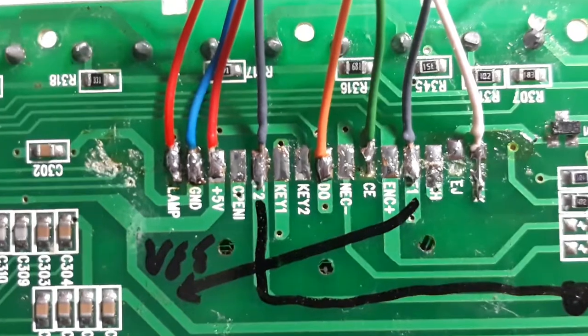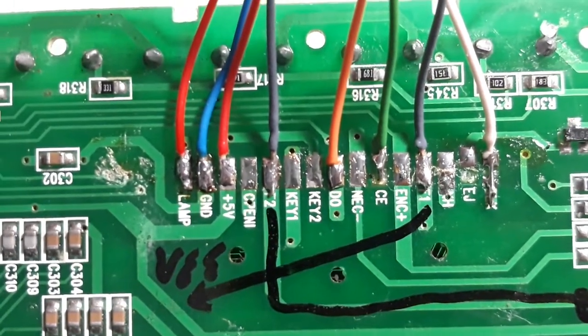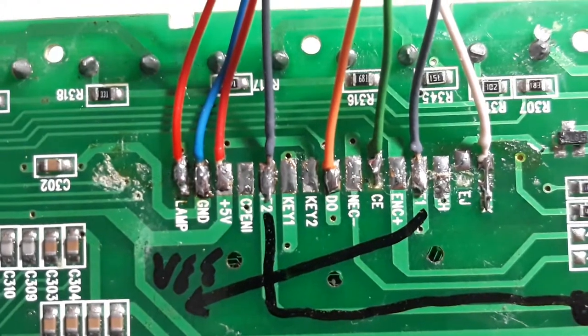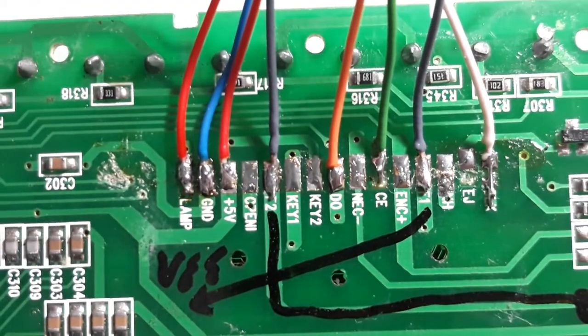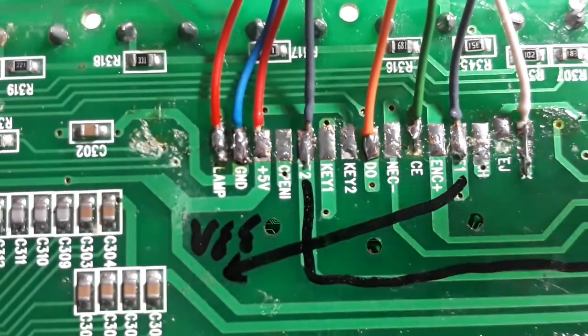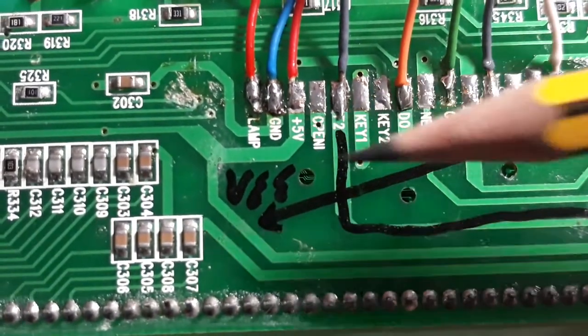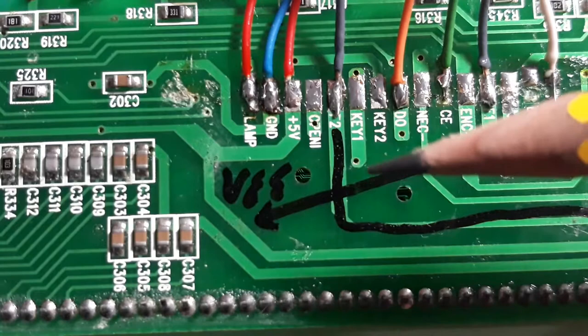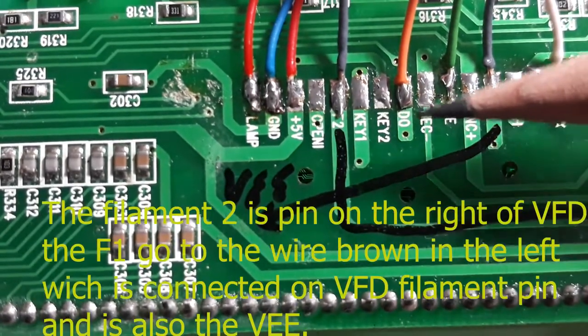And here is the connection of the board. You can find present the name of the connectors. You have, for example, here the GND, the plus five volts. This is not used. The filament 2, the data.